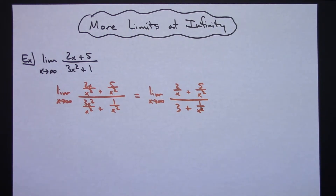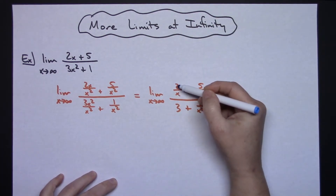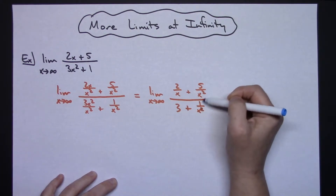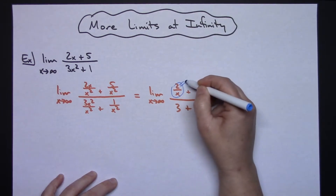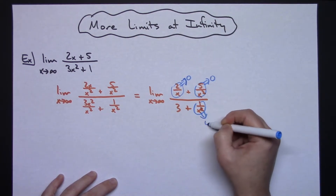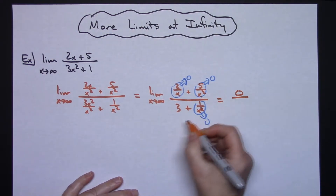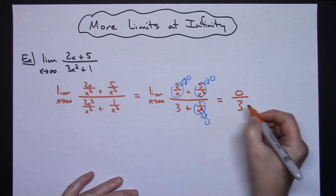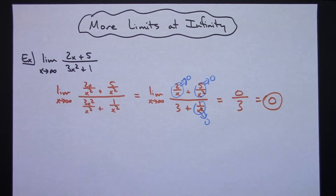Since we're working with limits as x approaches infinity, any time you have a real number on top and x to some power on the bottom, those terms go to 0. So the 2/x term goes to 0, the 5/x² term goes to 0, and the 1/x² term goes to 0. That leaves 0 in the numerator and 3 in the denominator, so 0 divided by 3 equals 0 — a nice clean result from dividing through by the highest power of x.